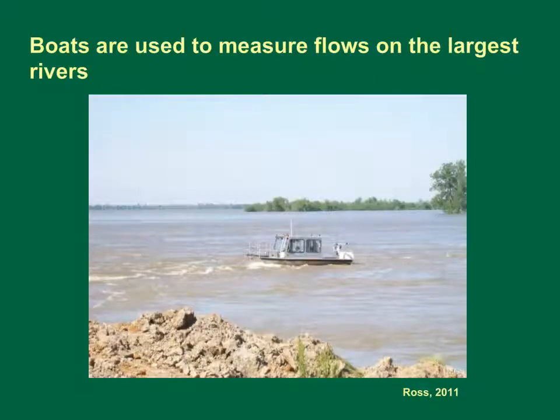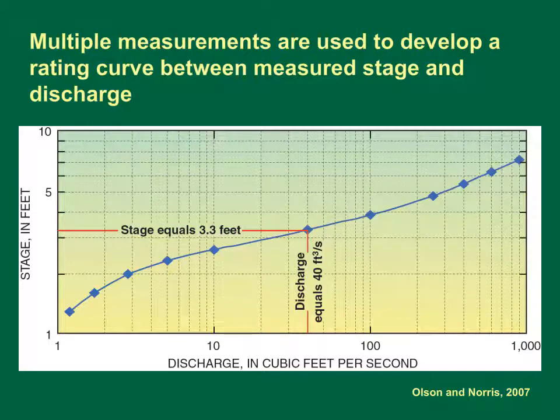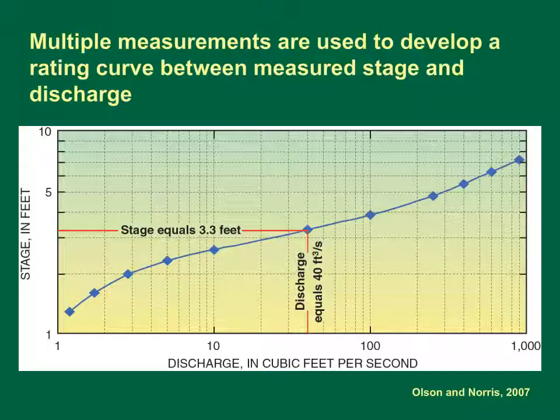Boats are used to measure flows on the largest rivers. This picture shows a discharge measurement being taken from a boat during the 2011 Mississippi River floods. Multiple measurements are used to develop a rating curve between measured stage and discharge. This schematic diagram shows how multiple measurements are used to develop a rating curve between measured stage, which is the water level in the stream, and discharge, which is the streamflow. These rating curves are used so that measurements of stream stage, which are fairly easy to automate at high frequency, can be translated into streamflow estimates.